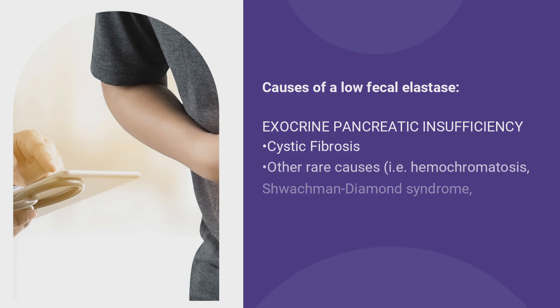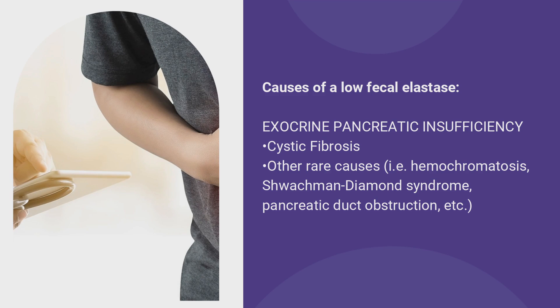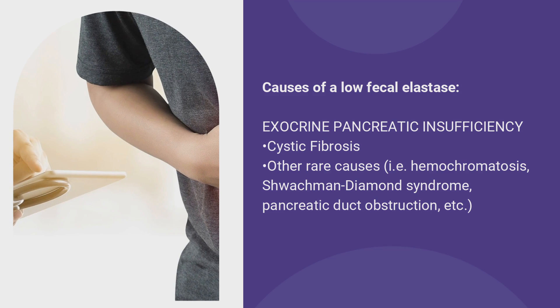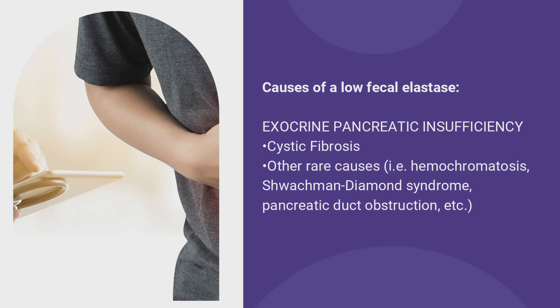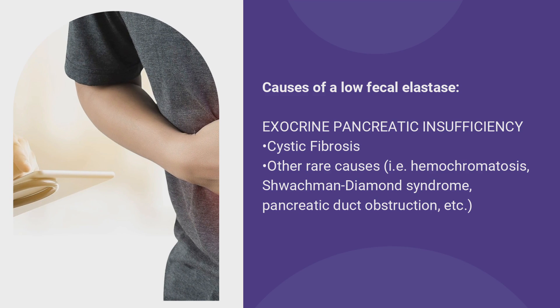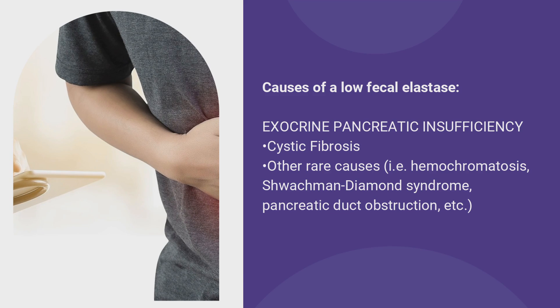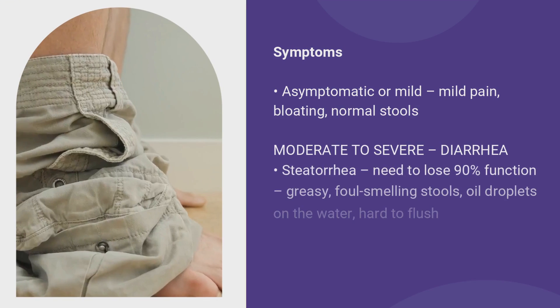We can also see exocrine pancreatic insufficiency in conditions like cystic fibrosis and hemochromatosis. There are other rarer causes, including some genetic conditions. It's important to remember that the most common cause of exocrine pancreatic insufficiency is chronic pancreatitis.